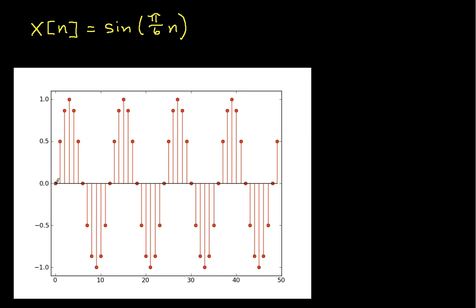It looks like this pattern just repeats itself over and over. So if I count here, I have 1, 2, 3, 4, 5, 6, 7, 8, 9, 10, 11, 12. I have 12 samples before the signal starts over again, so it looks to me like N equals 12.